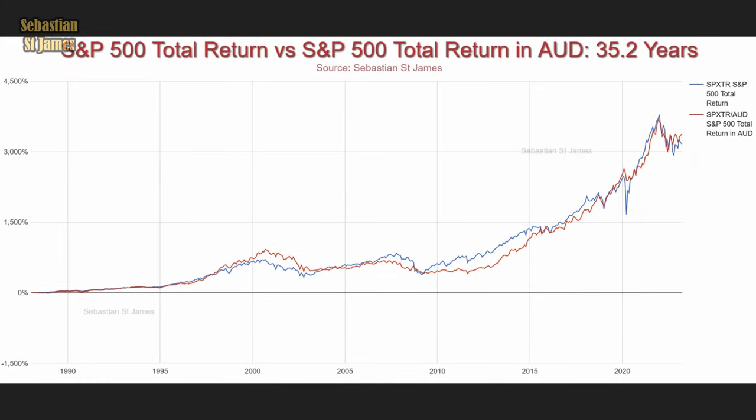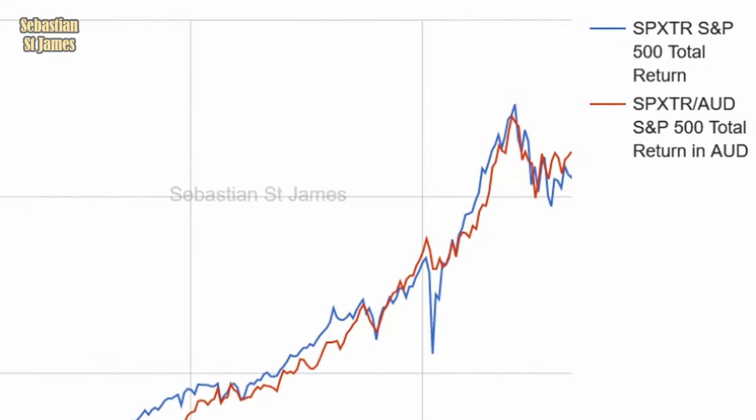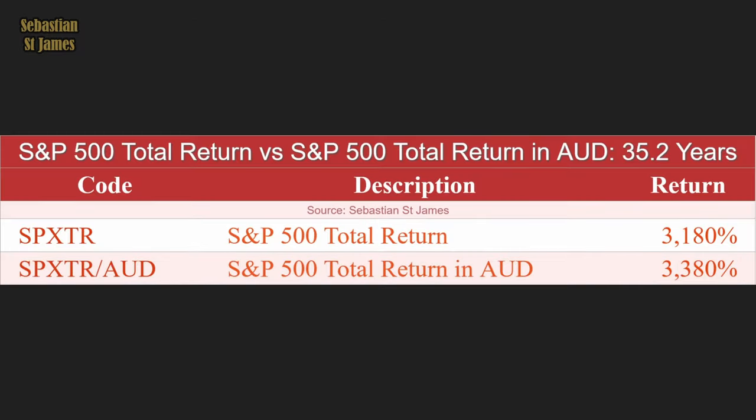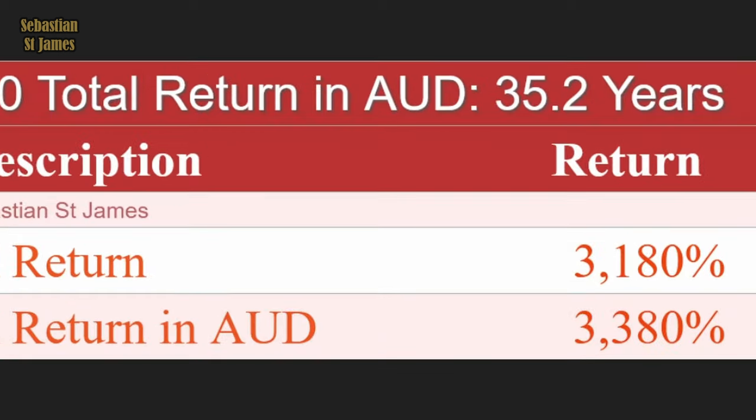In blue we have the total return in US dollars, and in red the Australian dollar conversion. Red is in front. Over 35.2 years, the US version returned 3,180%. Convert it to Australian dollars and you get 3,380%. Just by being an Australian, you can invest in the American market and beat the Americans at their own game.